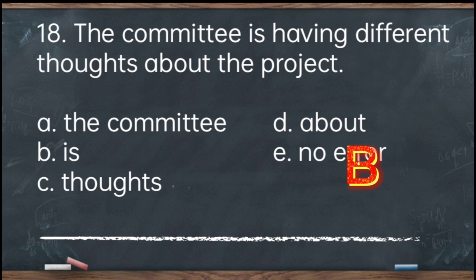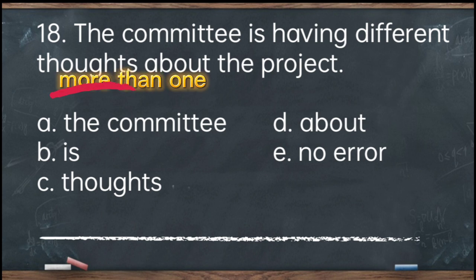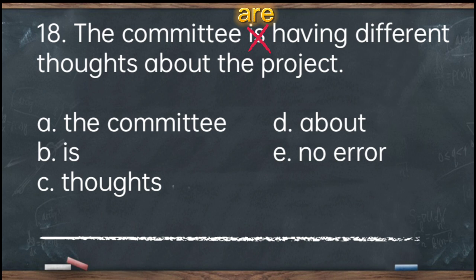Number 18. You may be wondering why 'is' is incorrect here. Committee is a collective noun, so it should be considered as one. However, the word 'different thoughts' talks about more than one individual, so committee here is considered plural. We say: the committee are having different thoughts about the project. But if we say 'thought' only, we say: the committee is having a simple thought about the project. Confusing, but following the rules clears it up.